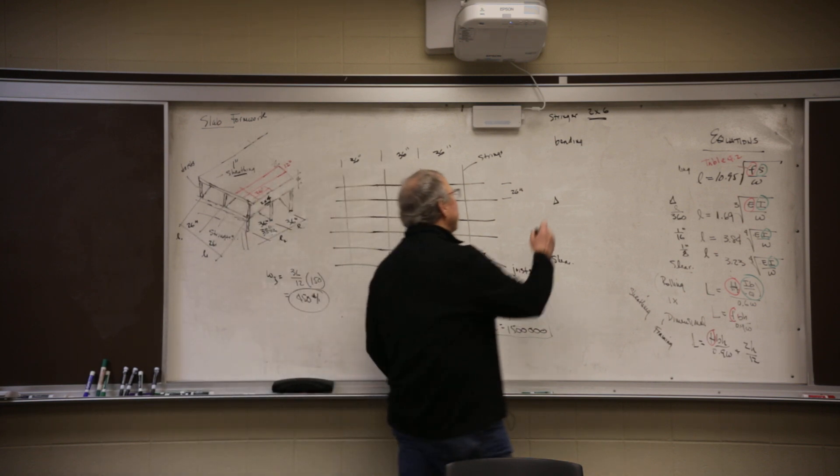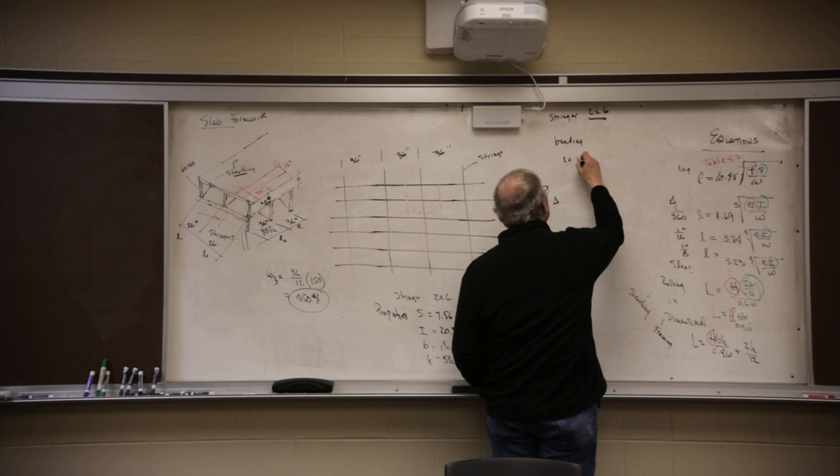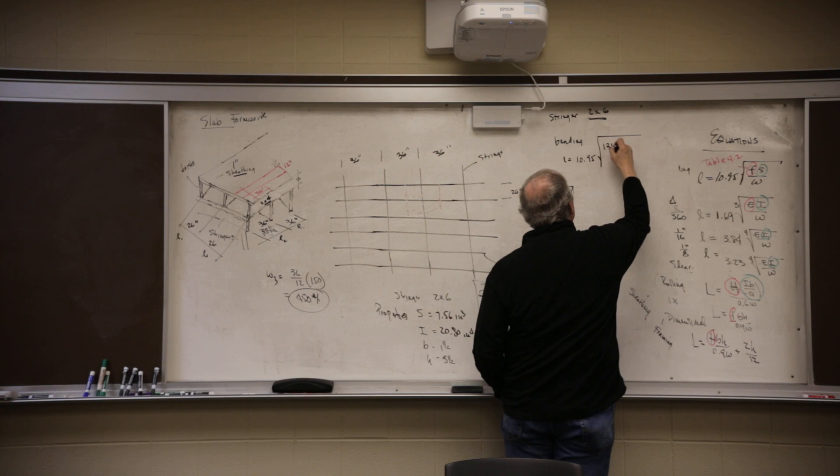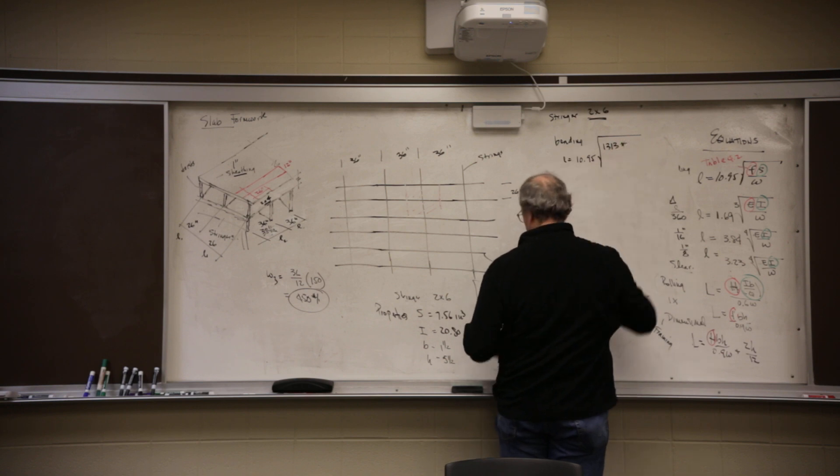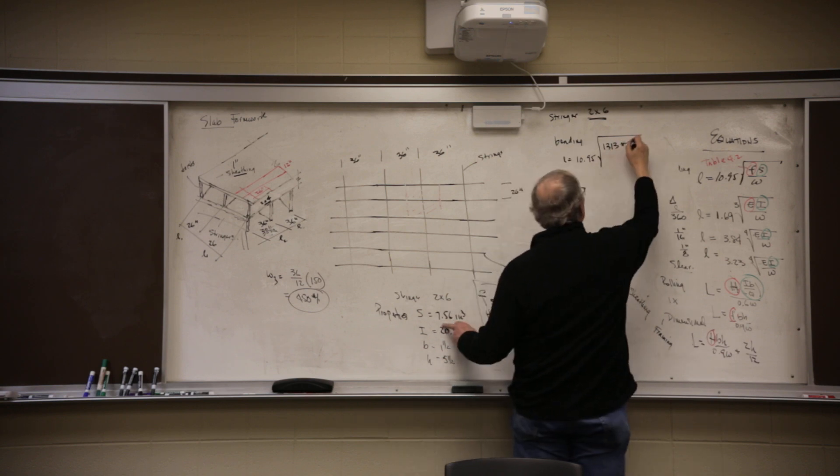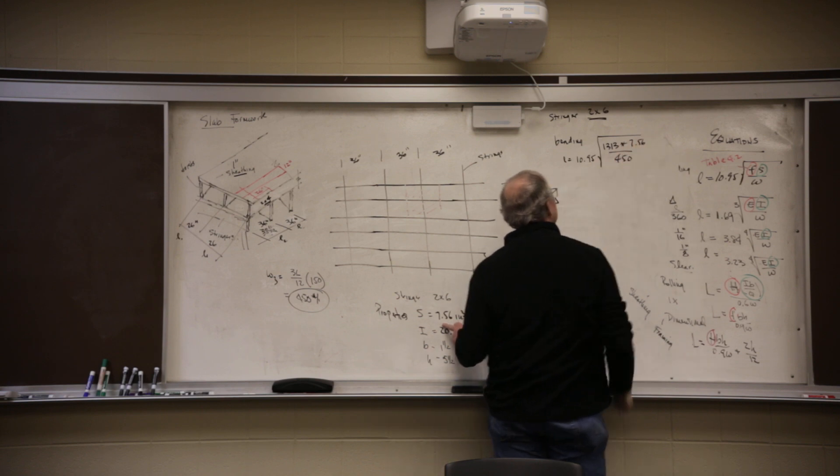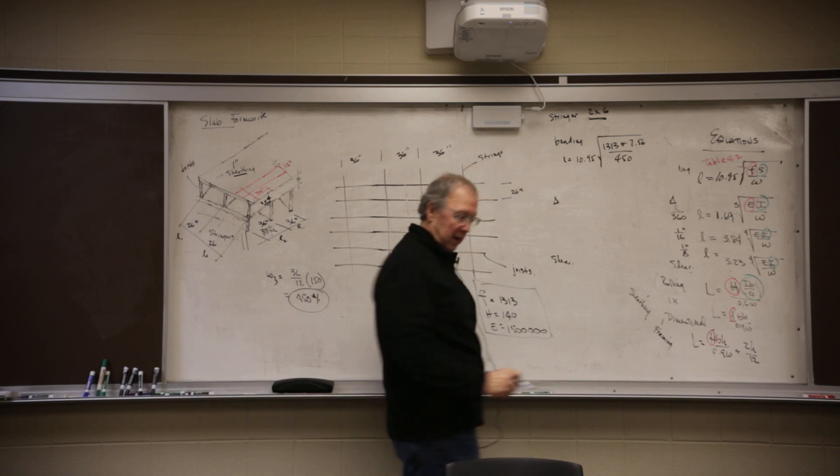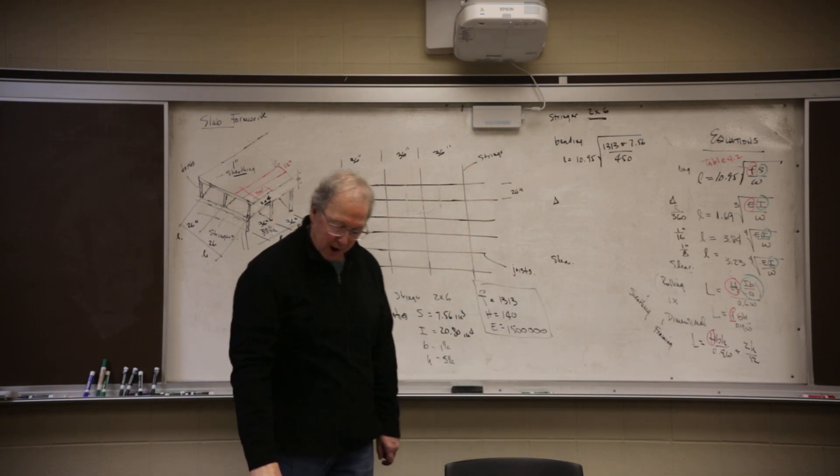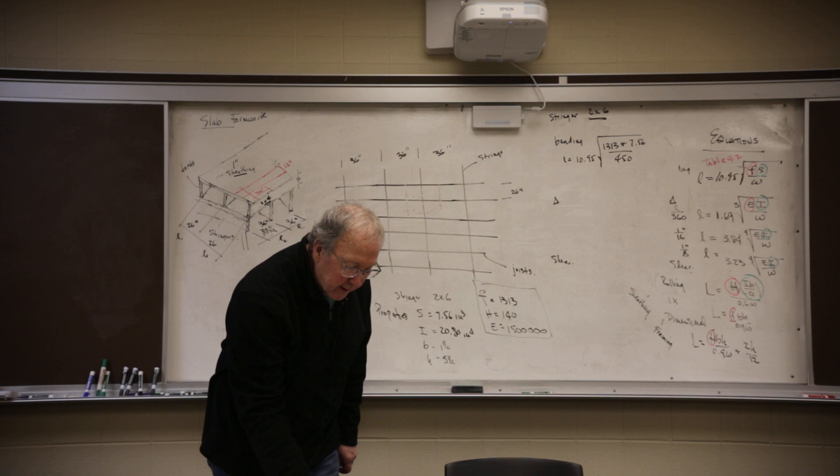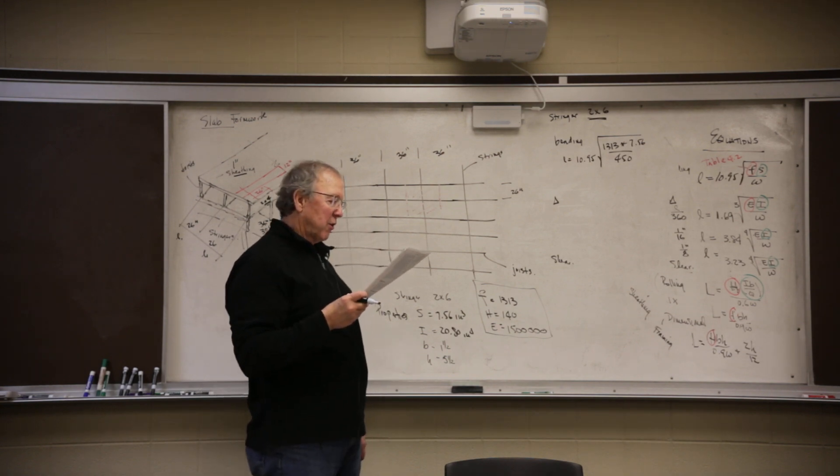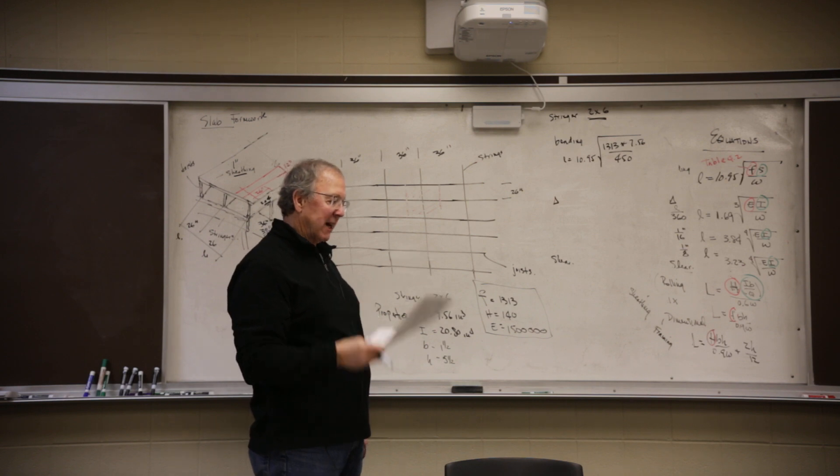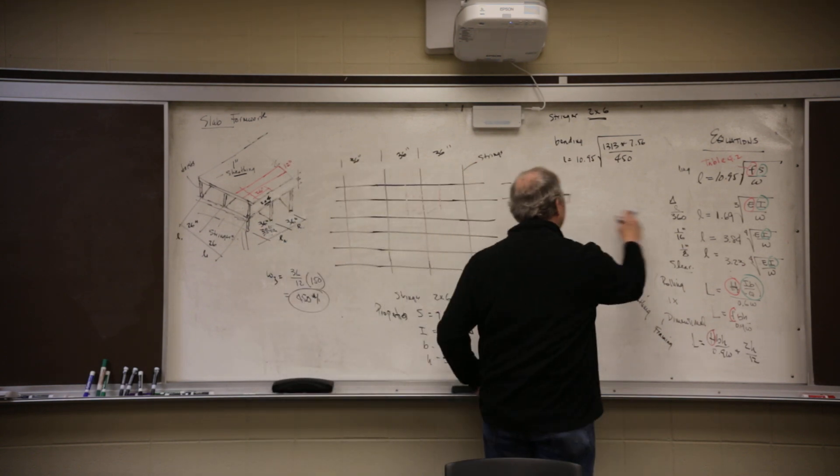So bending, we do the same thing. L equals 10.95 square root of F times S, S of 7.56 divided by the new W3. W3 comes here. Delta, delta. If you look at the problem statement, they used deflection criteria as L over 360 only again. L over 360, that's that one.